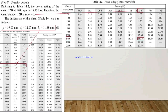In step 2, we select the chain. Referring to Table 14.2 for the power rating of simple roller chains, at 1400 rpm pinion speed, chain 12B has a power rating of 18.15 kW. Therefore, chain number 12B is selected. From Table 14.1, the dimensions for chain 12B are: pitch P = 19.05 mm, roller diameter D1 = 12.07 mm, and width B1 = 11.68 mm.